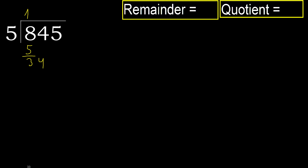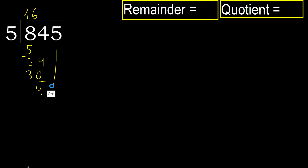Bring down to get 34. 5 multiplied by 7 is 35, which is greater. 5 multiplied by 6 is 30, which is not greater. Subtract. Next.